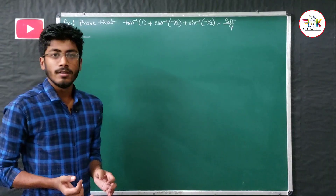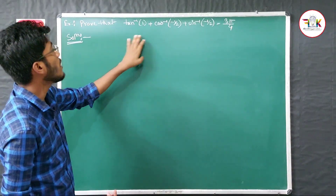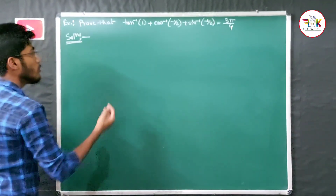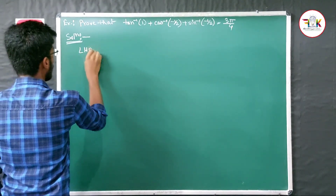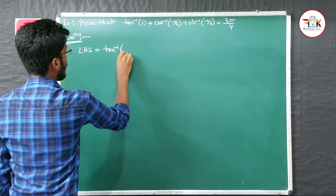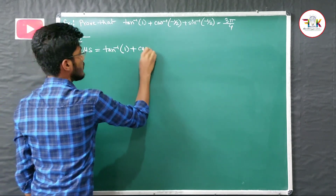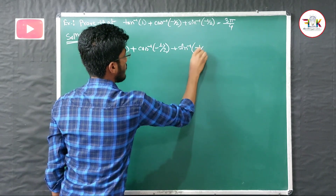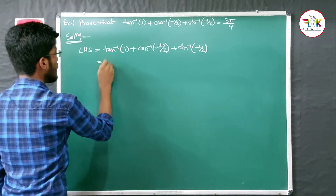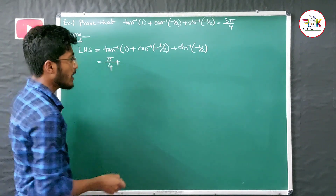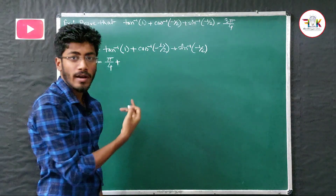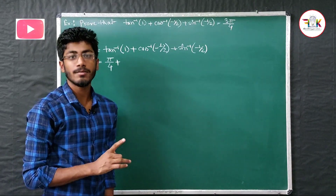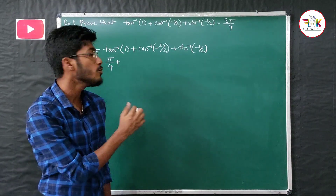The second question asks us to prove that tan⁻¹(1) + cos⁻¹(-½) + sin⁻¹(-½) equals 3π/4. This equation will turn out to be quite simple. The LHS becomes tan⁻¹(1) plus cos⁻¹(-½) plus sin⁻¹(-½). This is from Class 12 exercise, chapter 2, exercise 2.1.